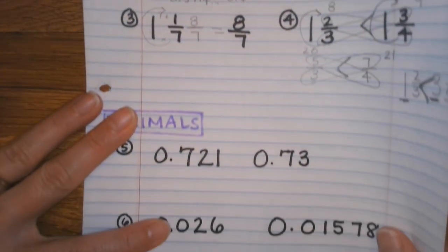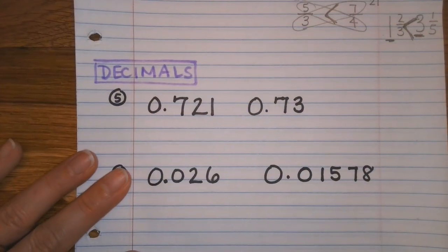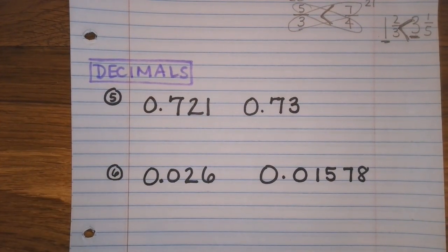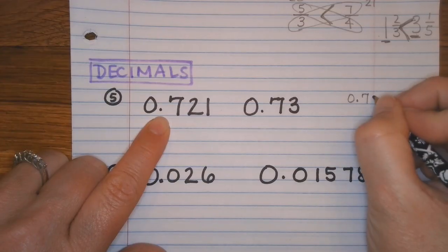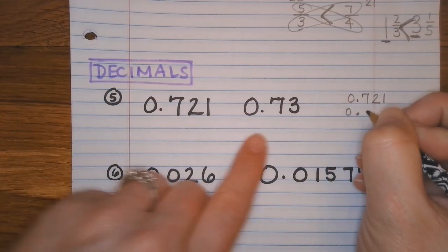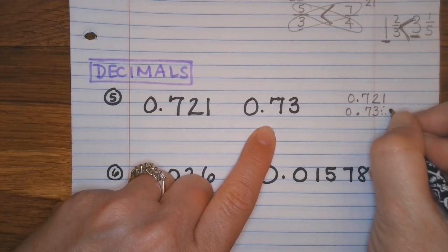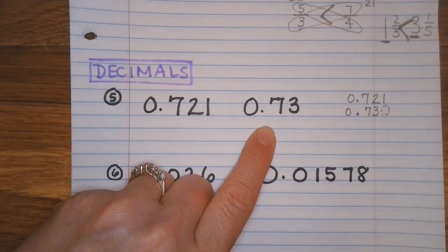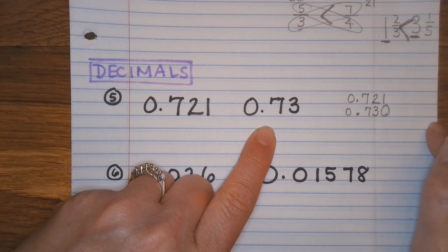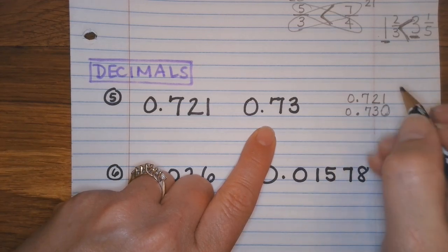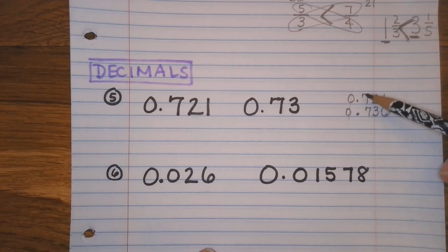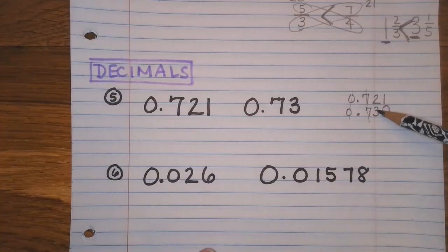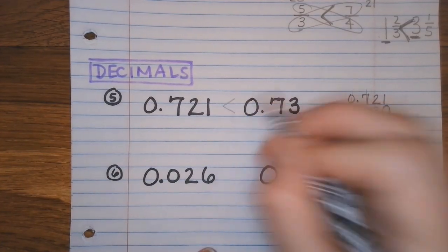Let's review how to compare decimals. You need to line up your decimal points and compare number by number from left to right. It is easier to do this vertically — if you're given it horizontally and you prefer it vertically, just take the extra couple of seconds to rewrite it, lining up your decimals vertically. Then fill in any holes with a placeholder zero, because you can always add a zero at the back of a decimal without changing its value. Go left to right: zero and zero are the same, seven and seven are the same, two and three — three is bigger, so that is the larger decimal.